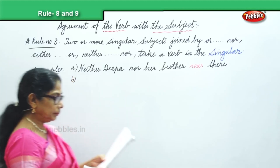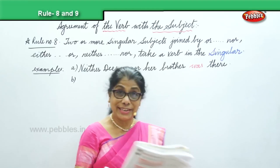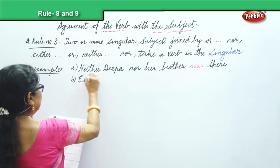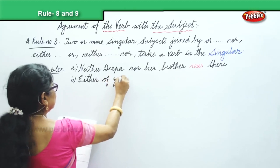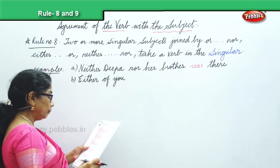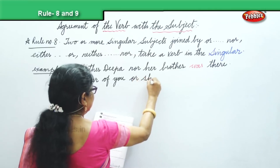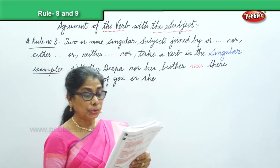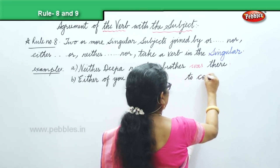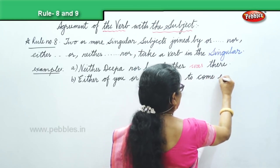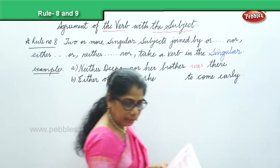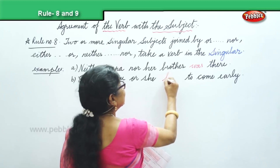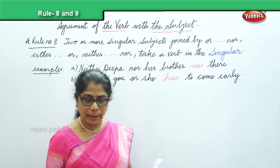Another example: 'Either of you or she — dash — to come early.' Either of you, meaning any one of you, or she has to come early. 'Has to come' is the singular form of the verb.